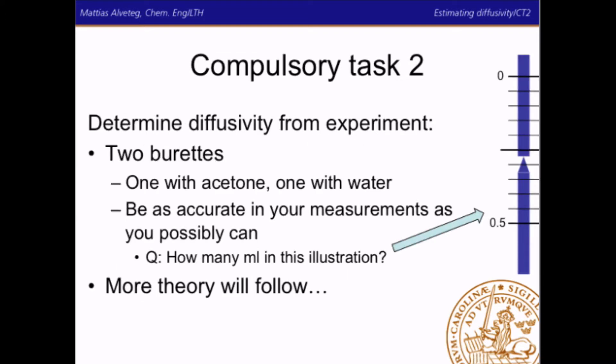And we will just introduce compulsory task two here by saying that you have two burettes, one with acetone and one with water. And you should study how fast the acetone and water evaporates. So, you go to these two burettes, note down at what time you did the measurements, and note down carefully exactly how many milliliters there are in the two burettes at that time. And be as accurate as you can. So, take a minute and think about what is the volume in this one here.